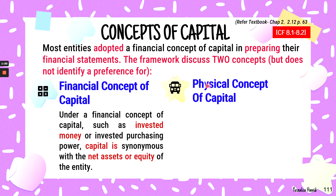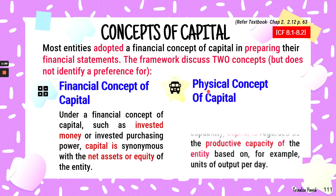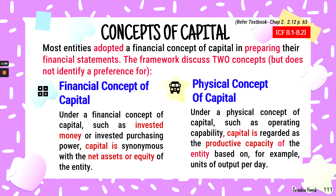The second concept is the physical concept of capital. Under this concept, such as operating capability, capital is regarded as the productive capacity of the entity — how productive the reporting entity is, for example, in terms of units of output per day.